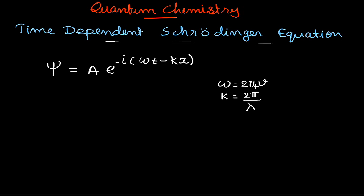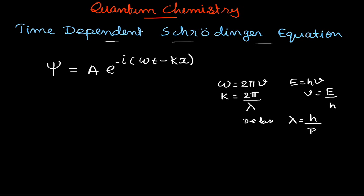We will be modifying both these relationships. From Einstein's expression, E = hν, so the value of ν can be written as E/h. Also, we are familiar with de Broglie's relationship: λ = h/p, where h is Planck's constant and p is the momentum. We will substitute both of these into our expression.